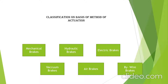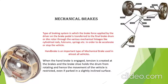Now, classification on the basis of method of actuation gives us various types: mechanical brakes, hydraulic brakes, electric brakes, air brakes, vacuum brakes, and bi-wire brakes. Mechanical brakes and hydraulic brakes are the most commonly used in daily life. In a mechanical braking system, the brake force supplied by the driver on the pedal is transferred to the final brake drum or disc rotor through various mechanical linkages like cylindrical rods, fulcrums, springs, etc., in order to decelerate or stop the vehicle.